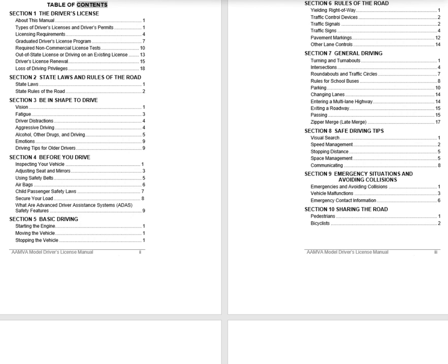Table of Contents, Section 1: The Driver's License. About This Manual, Types of Driver's Licenses and Driver's Permits, Licensing Requirements, Graduated Driver's License Program, Required Non-Commercial License Tests, Out-of-State License or Driving on an Existing License, Driver's License Renewal, Loss of Driving Privileges.